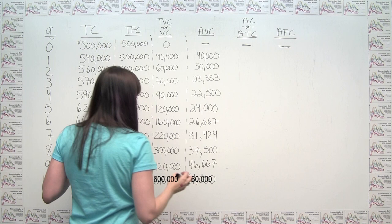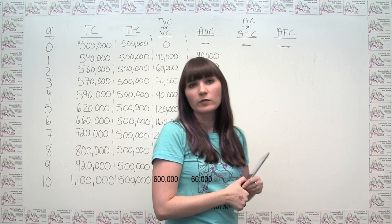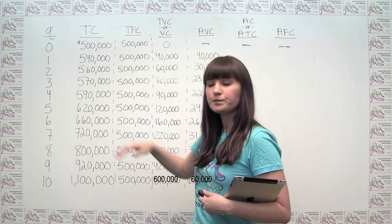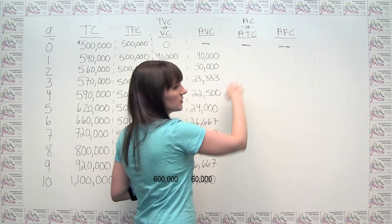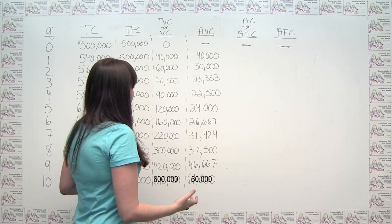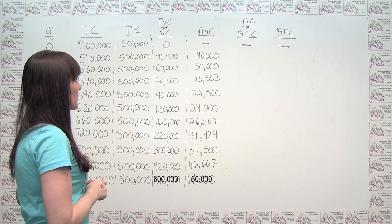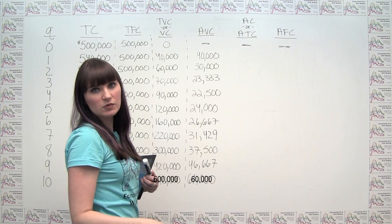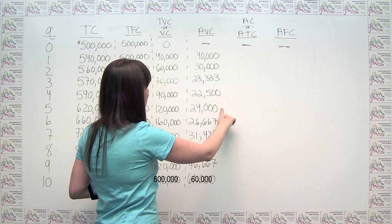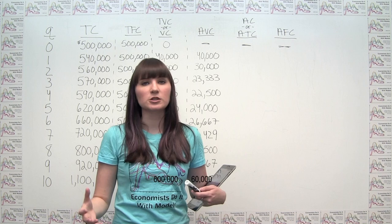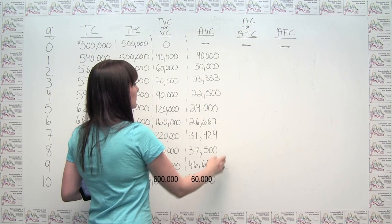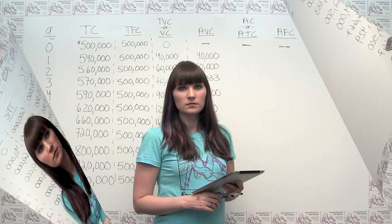A couple helpful things to notice: total costs are in dollars, but average costs are in dollars per car — or more generally, dollars per unit produced. This follows a pretty typical pattern: average variable cost goes down for a while as we get production efficiencies, but then turns around and starts increasing. When we graph it, we'll see something like a U-shaped curve.